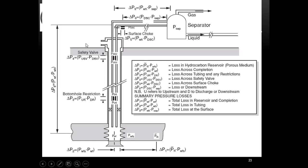The most important parameter here is pressure. Pressure plays a major role because if there's no pressure, the oil or gas will not come out to the surface. In order to produce oil and gas from the reservoir to the surface, there should be a pressure differential. If the pressure remains the same, the fluid will not move.